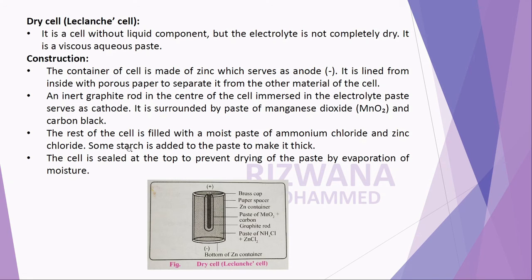Some starch is added to make the paste thick. The cell is sealed at the top with a brass cap to prevent drying of the paste by evaporation of moisture. This is the construction of the dry cell, with a zinc container, moist electrolyte, MnO₂ combined with carbon, surrounded by a viscous paste of NH₄Cl and ZnCl₂.